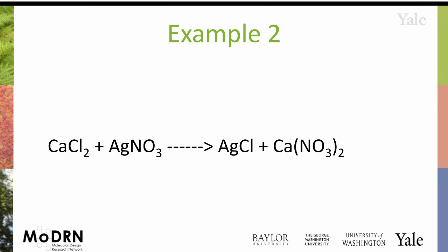So to look at a more complicated equation, here we have calcium chloride and silver nitrate going to silver chloride and calcium nitrate. So first thing we want to check is, is everything balanced? If we start with the calcium, there's one here, there's one here, so calcium is okay.